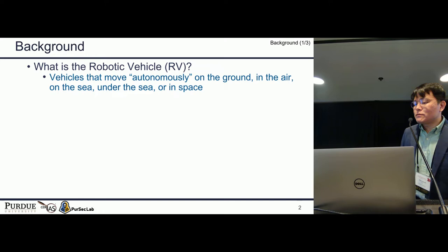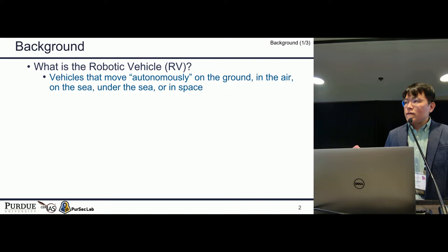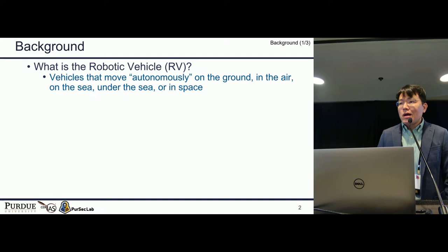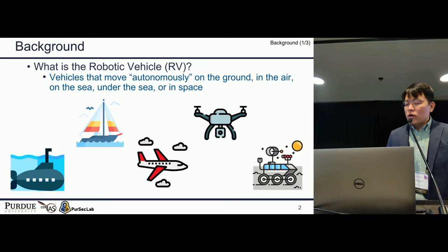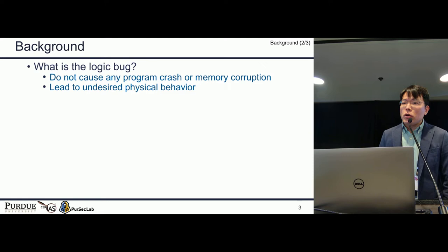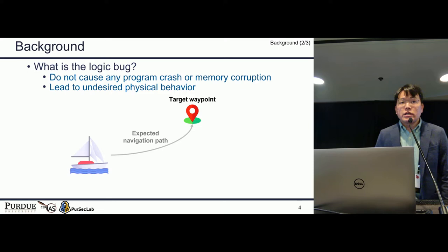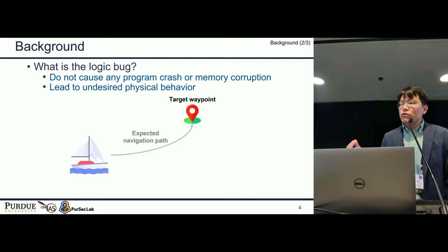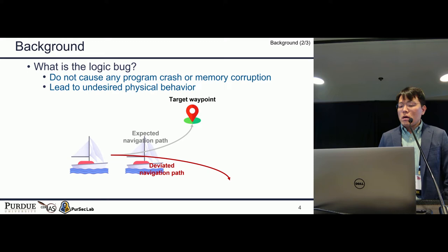Let me first explain what a robotic vehicle is. If a vehicle autonomously operates by itself, we refer to such a vehicle as a robotic vehicle. Nowadays, the use of robotic vehicles is dramatically increasing — you can find submarines, sailboats, drones, and rovers. In this work, we focus on logic bugs. A logic bug does not cause program crashes or memory corruption, but leads to unexpected physical behavior. For example, when a sailboat navigates to a target waypoint, a bug can make the sailboat deviate from the navigation path.